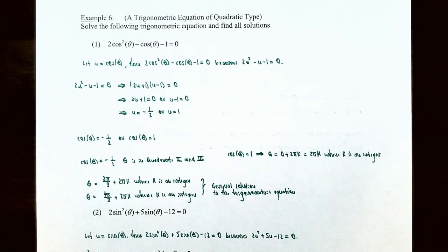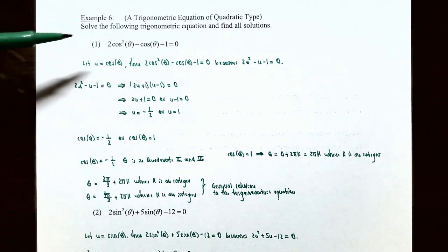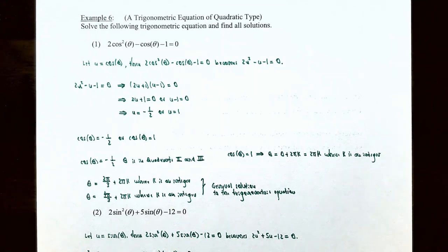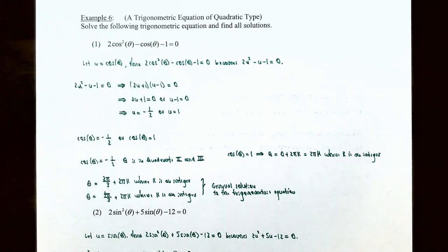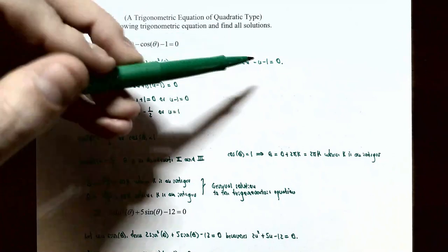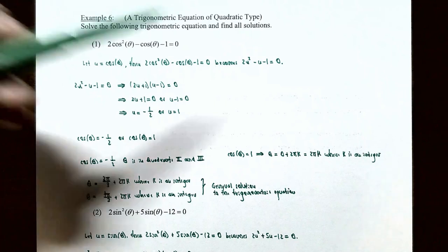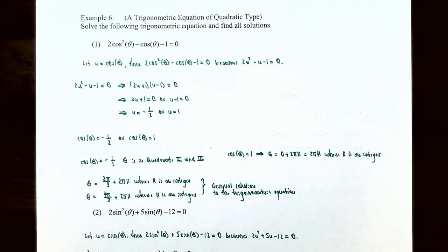Let's finish up with example 6: solving a trigonometric equation of quadratic type. Solve the following equations and find all solutions. Number one: 2cos²θ − cosθ − 1 = 0. All terms are on one side and the other side equals zero. The equation involves cosθ squared and cosθ, so let u = cosθ. The equation becomes 2u² − u − 1 = 0 — this is a quadratic equation, making it a trigonometric equation of quadratic type.